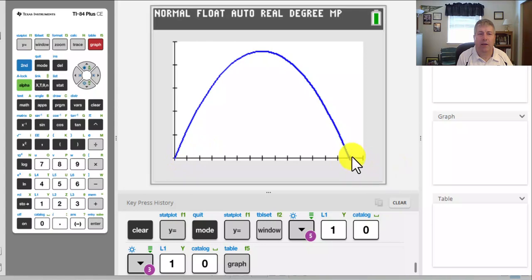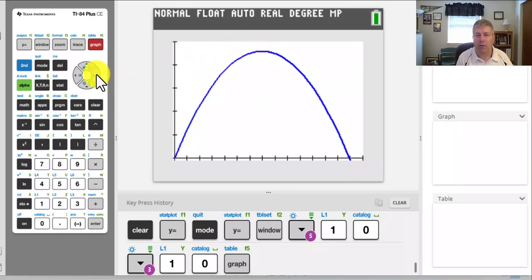So we get a pretty nice looking graph. It looks like it's going to go about 140 feet, and it looks like its maximum height will be around between 40 and 50. We have a pretty good window here.